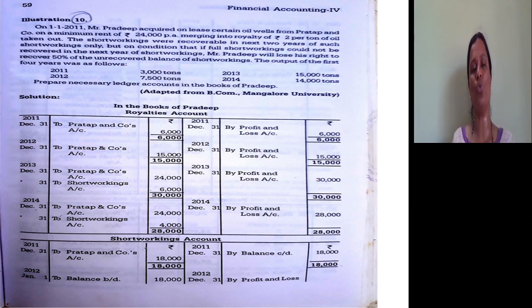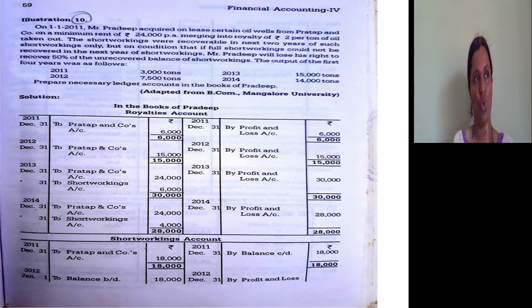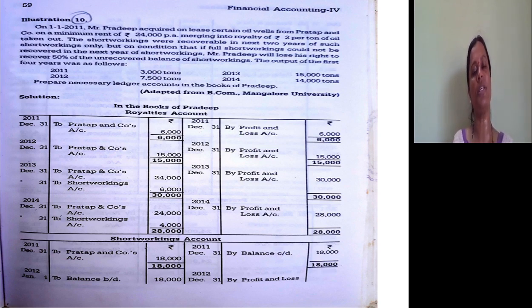The short workings were recoverable in the next 2 years of such short working only, but on the condition that if the full short working could not be recovered in the next year of short working, Mr. Pradip will lose his right to recover 50% of the unrecovered balance of short working. So next 2 years from the date of occurrence of short working, the lessee can recover. But if he fails to recover fully in the very next year, he will lose the right to recover 50% of the unrecovered amount.